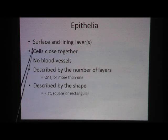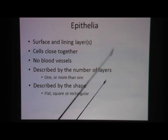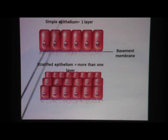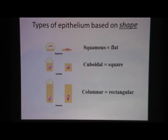Epithelia, by definition, must be on the surface, lining something, and the cells are going to be very close together so there are no spaces in between. There would be no blood vessels in epithelial tissues. Often we name them by the number of layers and the shape of the cells. If the cells only form one layer on the surface, then it's simple epithelium. If the cells form more than one layer, then we call that stratified epithelium. In this case, we're definitely talking about more than one layer because it's stratified squamous.